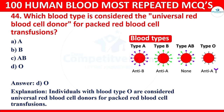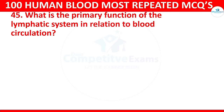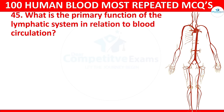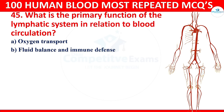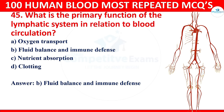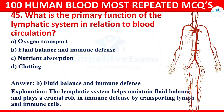Question 45: What is the primary function of the lymphatic system in relation to blood circulation? Options: oxygen transport, fluid balance and immune defense, nutrition absorption, or clotting. The correct answer is fluid balance and immune defense. The lymphatic system helps maintain fluid balance and plays a crucial role in immune defense by transporting lymph and immune cells.